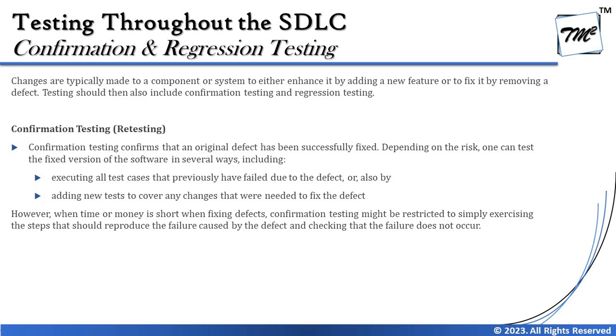Number one is confirmation testing, which is very commonly known as retesting. This is generally conducted when we report a defect. When a tester tests a particular module or functionality and a test case fails, a defect is reported to the developer to get it fixed. The developer works on it, fixes it, and returns the build to the tester.